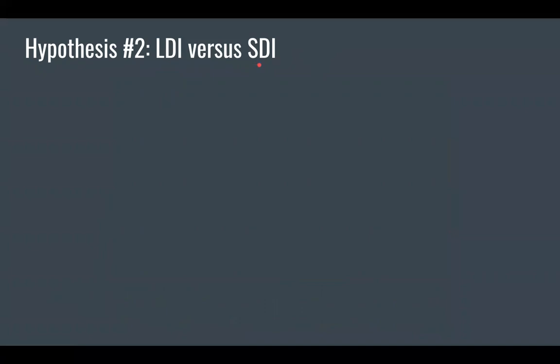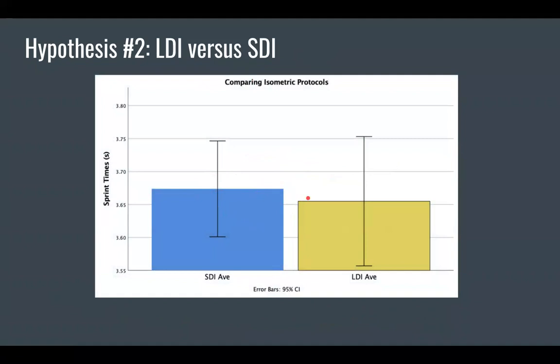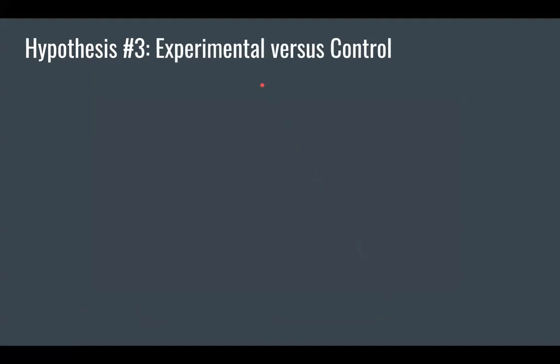Second, looking at the long duration outperforming the short duration, we see with these almost identical error bars that they were not significantly different. And this is reinforced with our mean differences when we're looking at the long versus the short duration, the short duration being about two hundredths of a second slower, though statistically insignificant. Therefore, we must reject the second hypothesis that the long duration protocol did not outperform the short duration.